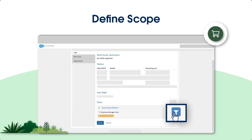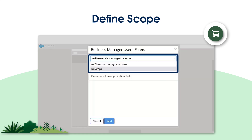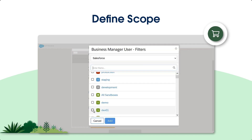Now, to define the scope, click on the filter icon, select your organization, and the instances will appear. Select the particular instances that you want the user to access. If you want the user to access only a single sandbox, click on that sandbox.